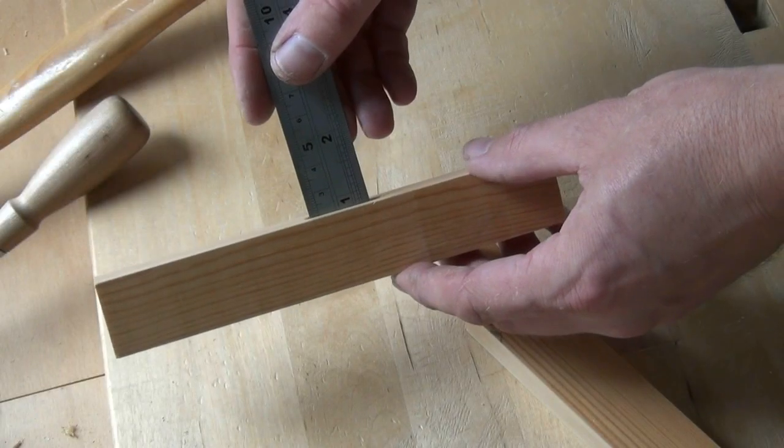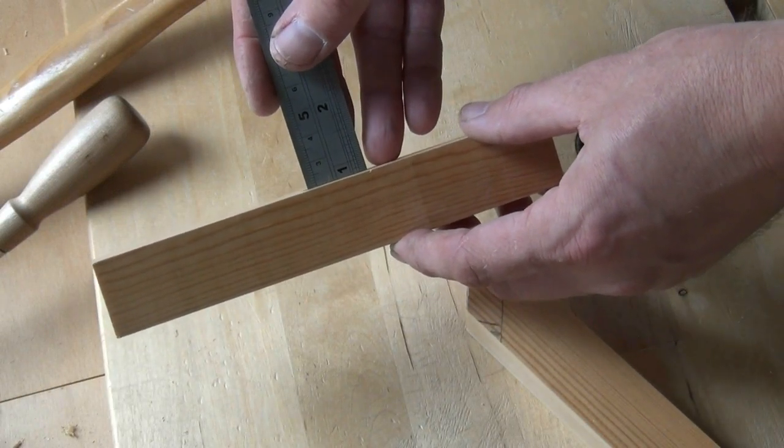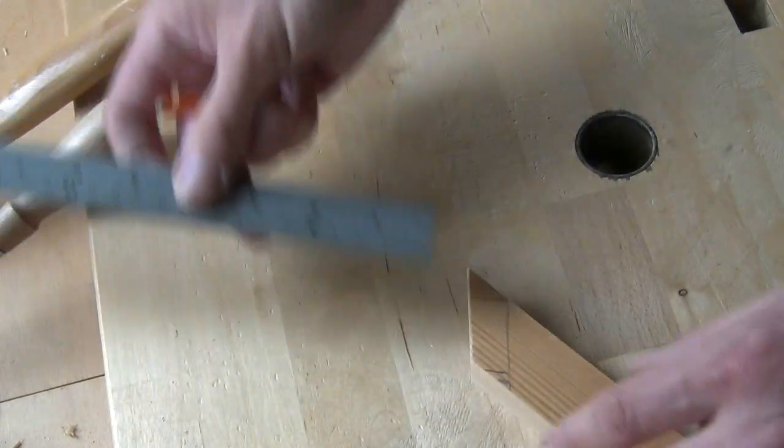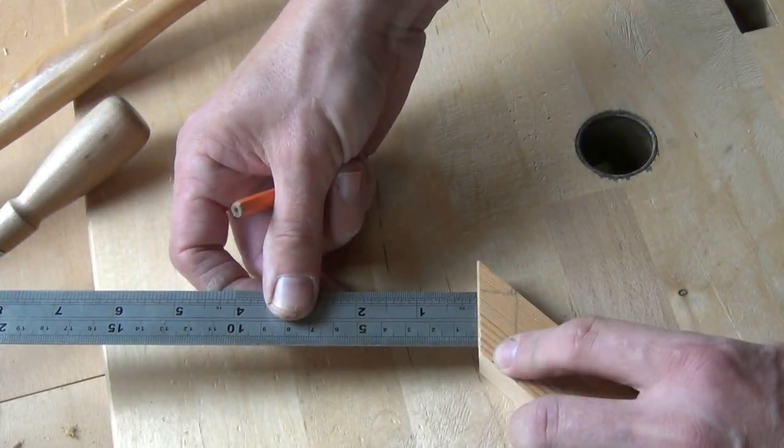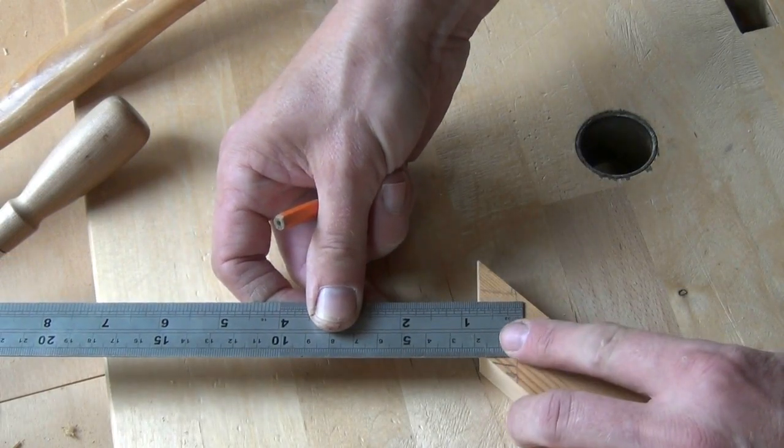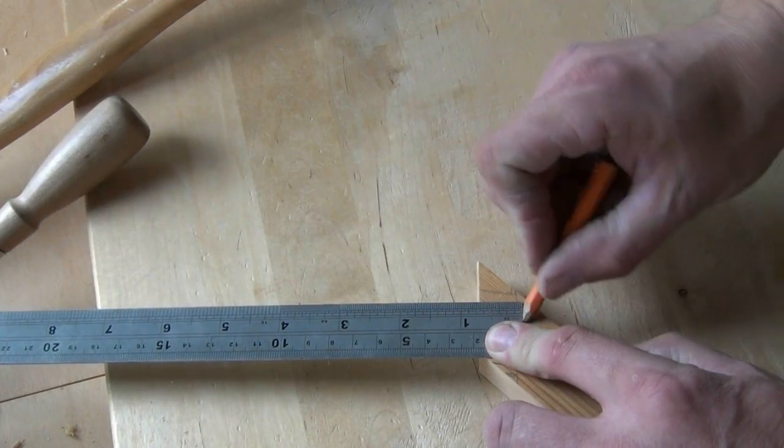First we measure the depth of our mortise which is just a little bit over 3 quarters of an inch then we mark 3 quarters of an inch square from the joint line for our tenon. So that would be there. Make a mark.